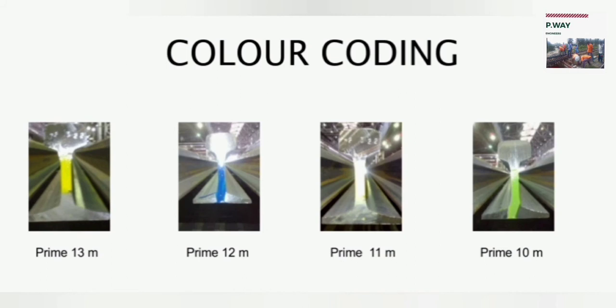As you can see here, the full length 13m rail is painted with yellow color, the 12m rail with blue color, the 11m rail with white color, and the 10m rail is painted with green color on the web regions.